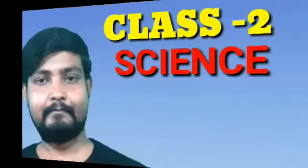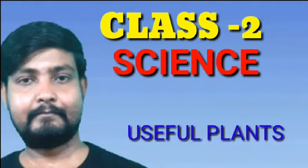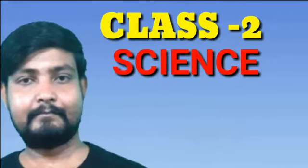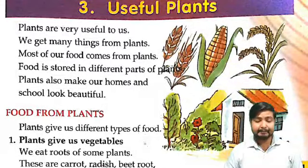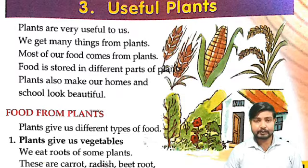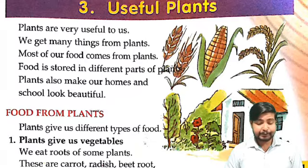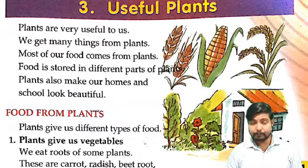Good morning children. Today I am going to teach you Class 2 Science Chapter 3, Useful Plants. Plants are very useful to us. We get many things from plants. Most of our food comes from plants. Food is stored in different parts of plants. Plants also make our homes and schools look beautiful.